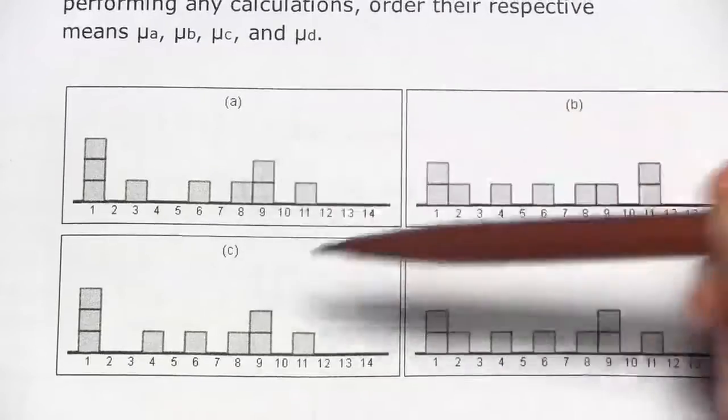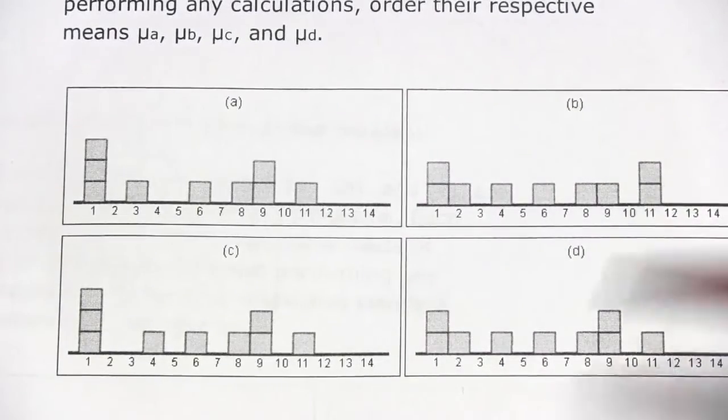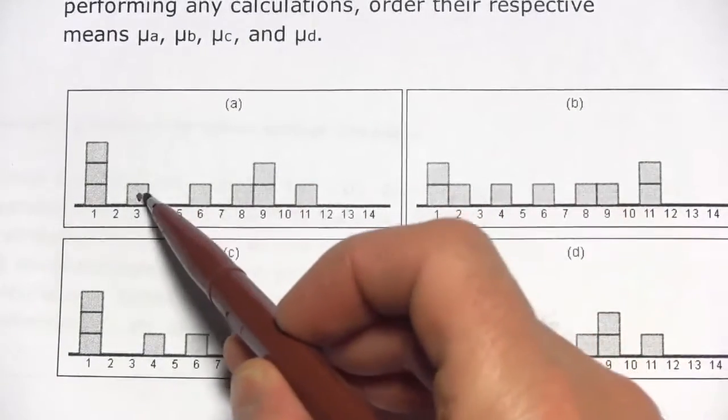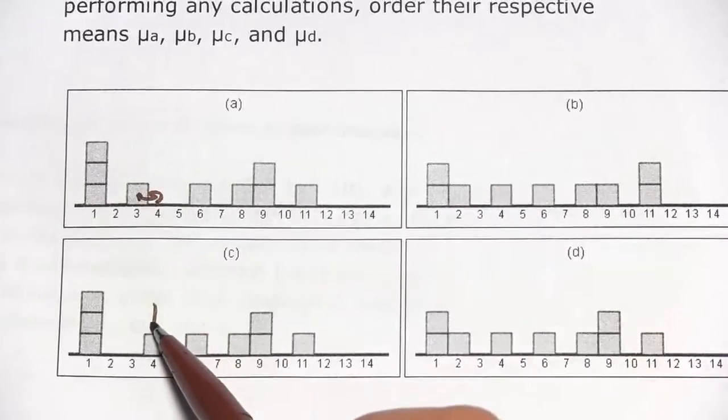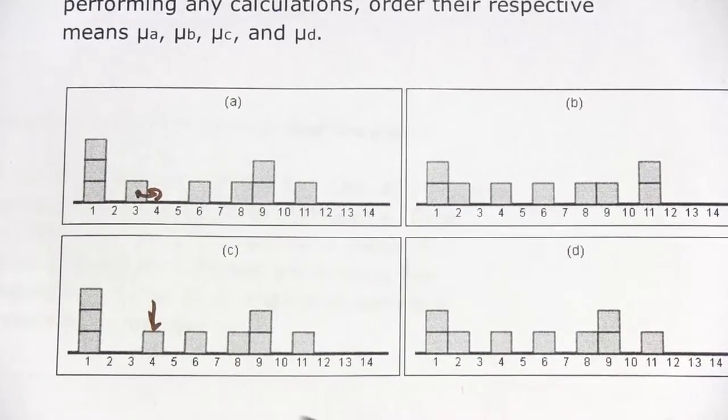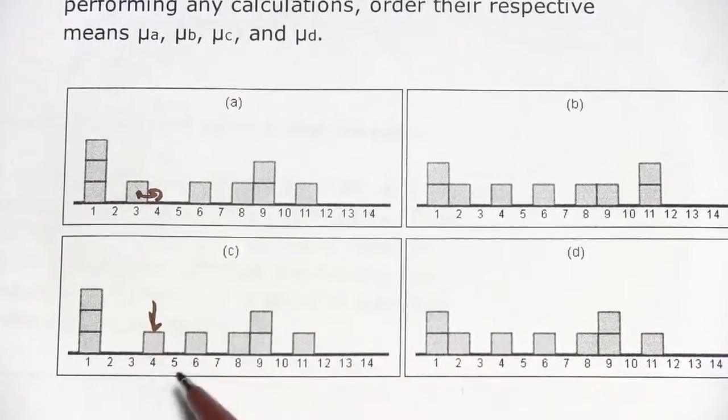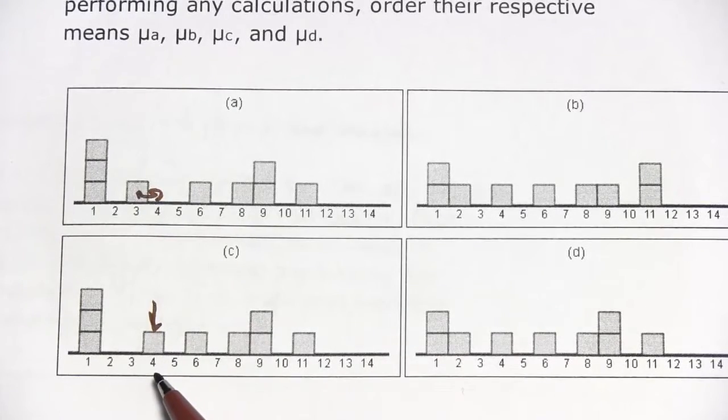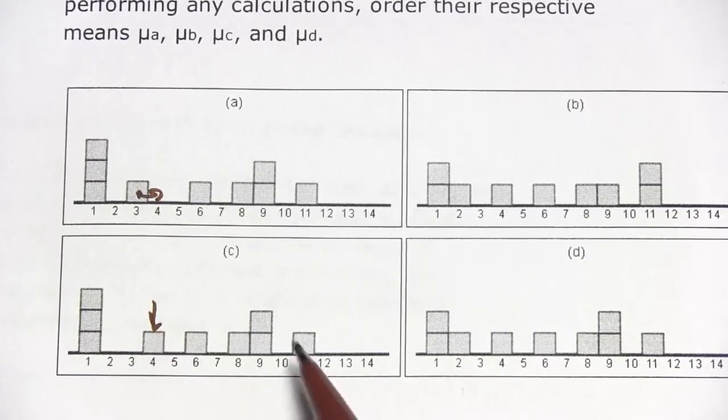The first thing that jumps out at me is that a and c look almost identical. The only difference is it looks like this three here gets moved up to the four down here, which means all the other numbers are the same but instead of a three we have a four down here.